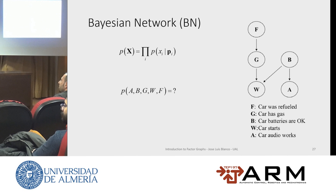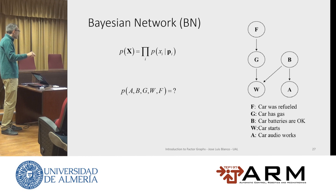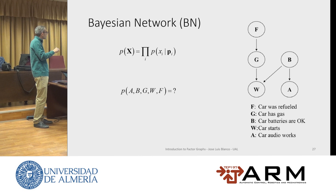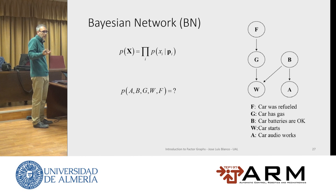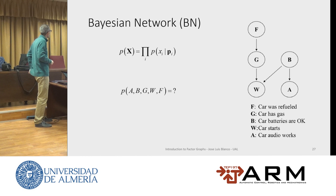For example, P(G|F) is how likely it is for the car to have gas if it was refilled. You can invent a function where, depending on time after refilling, the car still has gas and the probability decreases with time or distance. These are functions you have to construct with some kind of model. Any comments or questions? Did you get an idea of what a Bayesian network is?